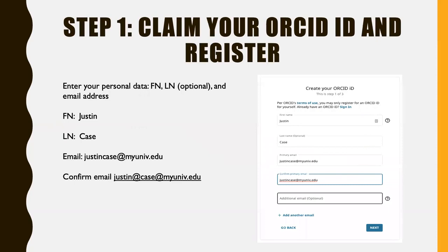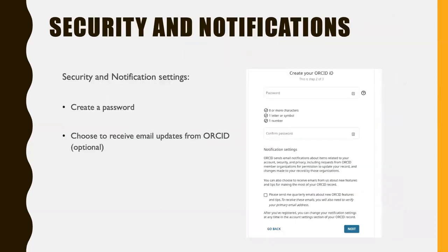You'll see a form something like this. You will first enter your personal information — your first name and last name, although last name is optional. You do need to indicate an email address and confirm that email address. The next part is to indicate security for your record and notification, so you're going to create a password with these parameters. You also have the option of signing up for quarterly emails from ORCID, but that's totally optional.